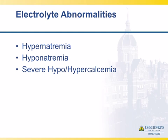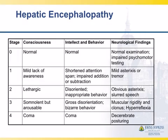Electrolyte abnormalities — especially hypernatremia and hyponatremia, severe hypo- or hypercalcemia (not usually mild calcium changes, but really significant ones), elevations in BUN, and elevations in ammonia will absolutely cause altered mental status. Speaking of hepatic encephalopathy, liver failure is a classic cause. When you start having alteration of mental status from hepatic failure, you should begin to have some asterixis. As it becomes more severe, you can get slurred speech, hyperreflexia, rigidity, and even coma. In patients with poor hepatic function, really think about ammonia and look for asterixis.